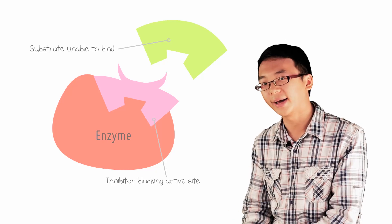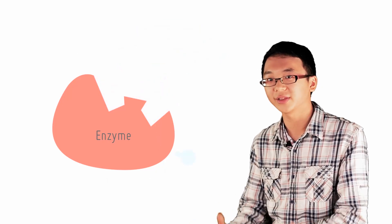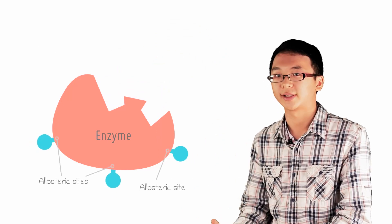But inhibitors don't always have to bind to the active site. There are other binding sites of the enzyme that are not the active site, and we term these sites allosteric sites.